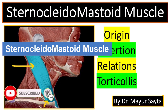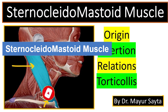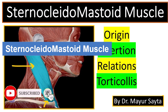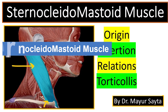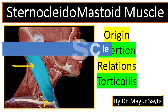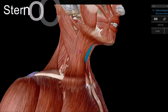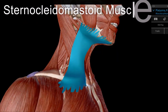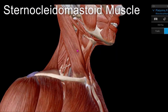In this video we are going to discuss the sternocleidomastoid muscle — its origin, insertion, relations, as well as the applied anatomy of the sternocleidomastoid muscle. The sternocleidomastoid muscle divides the anterior as well as the posterior triangle.